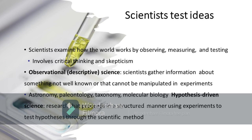Observational or descriptive science refers to when scientists gather information about something not well-known or that cannot be manipulated in experiments. Examples include astronomy, paleontology, taxonomy, and molecular biology.